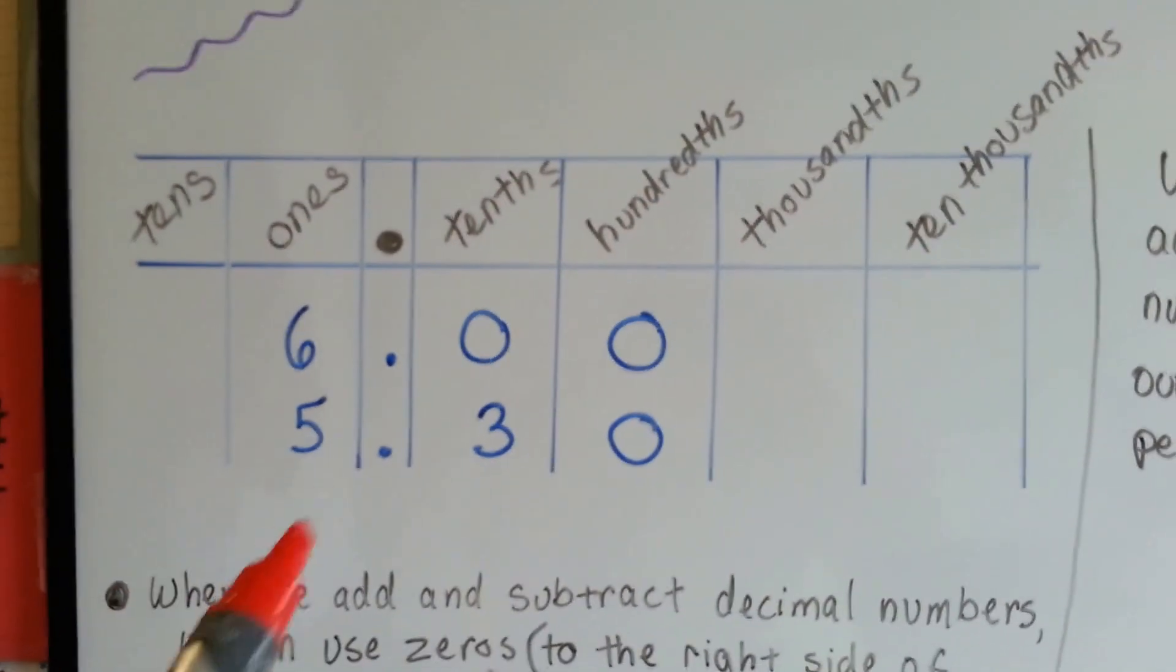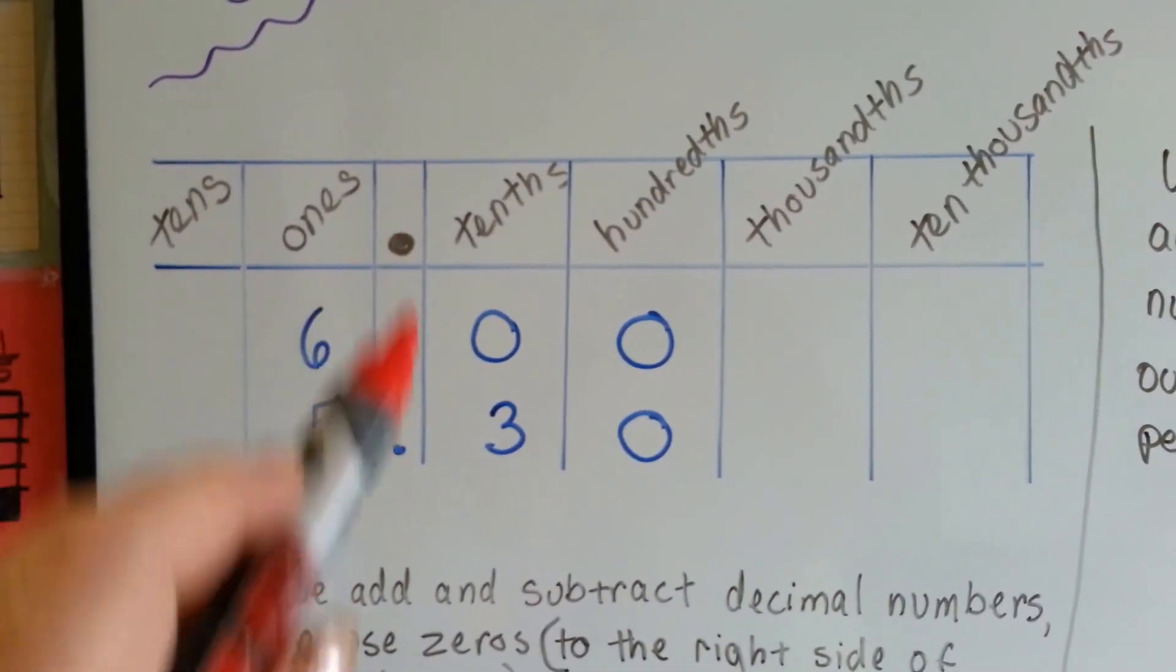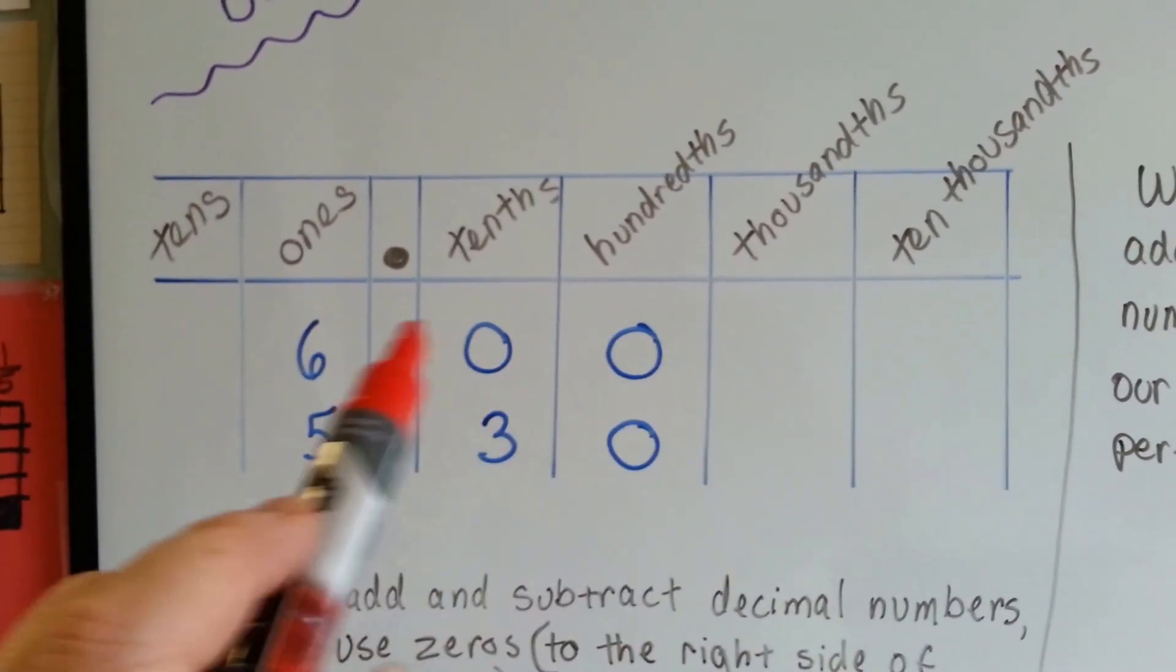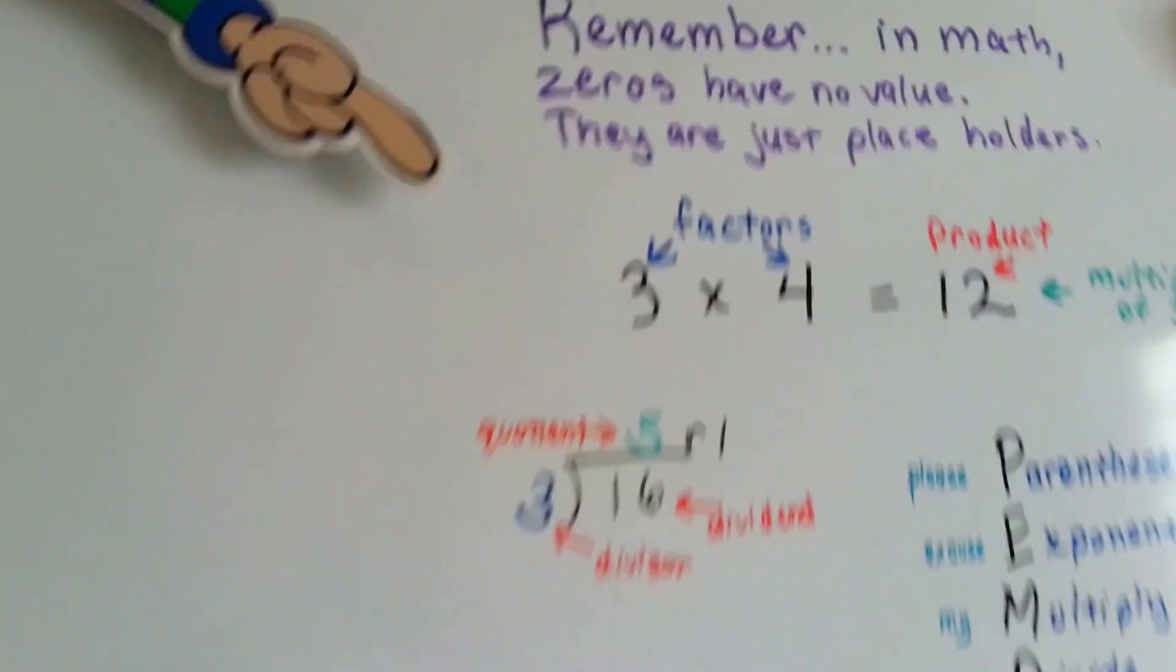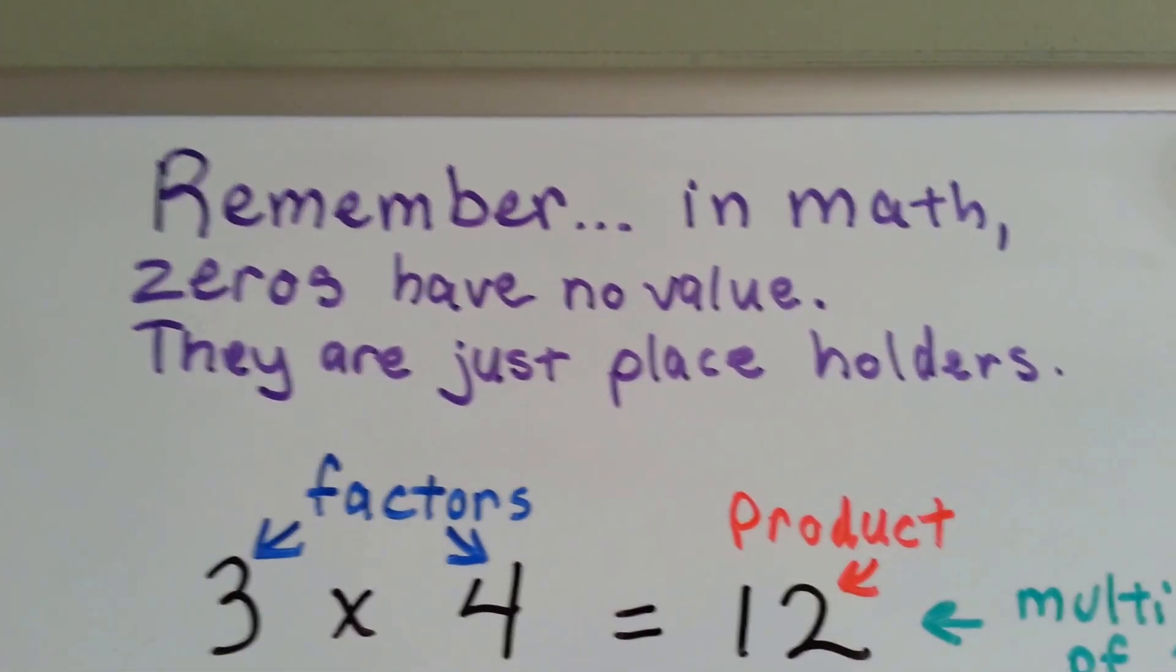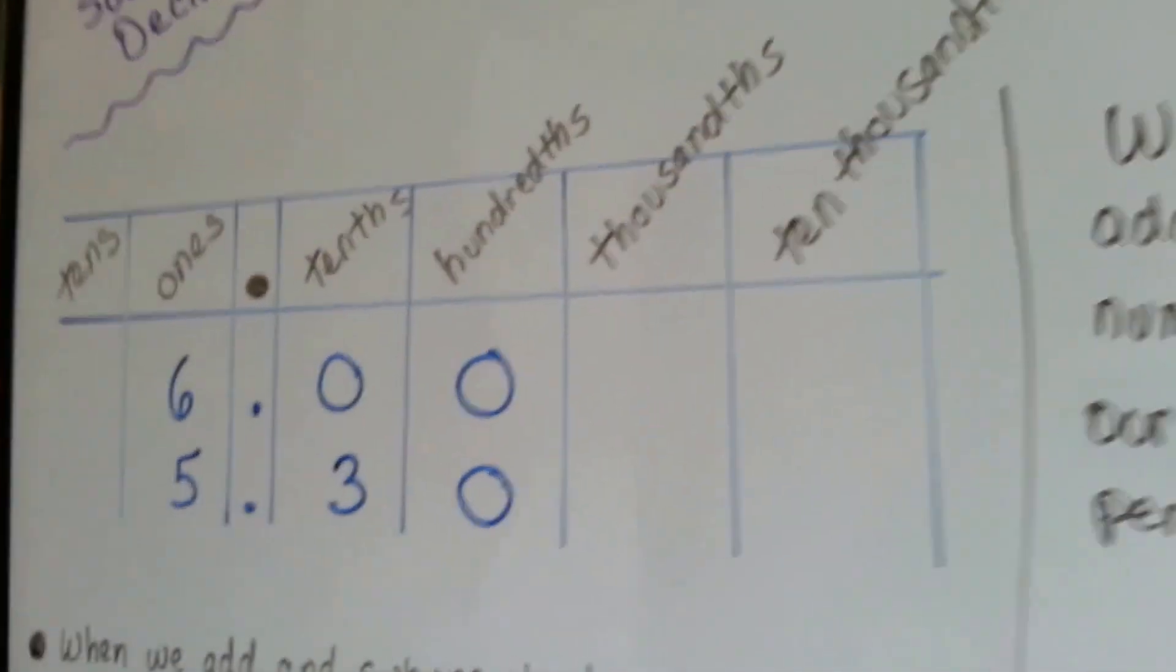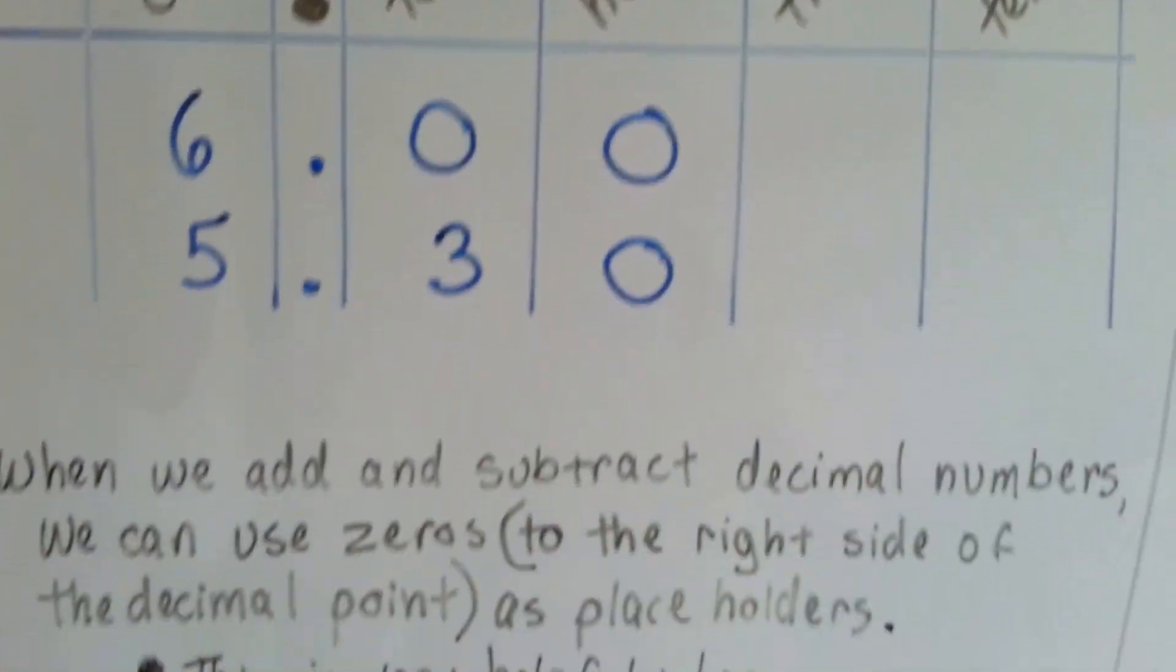In the place values, we can see that a number that is just 6 could have invisible zeros here. And you remember my favorite rule? I say this over and over again. In math, zeros have no value. They're just placeholders.